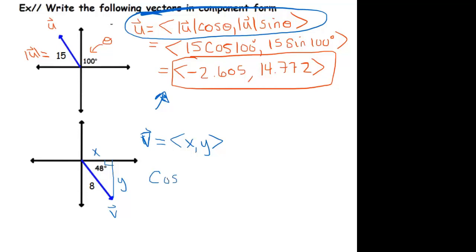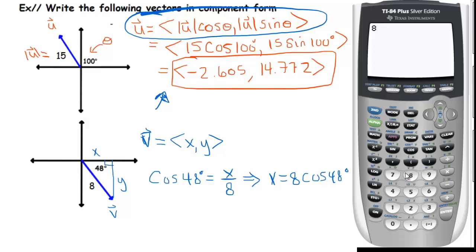The cosine of 48 degrees is equal to x over 8, which means that x equals 8 times cosine 48 degrees. And in our calculator, we get 5.353.